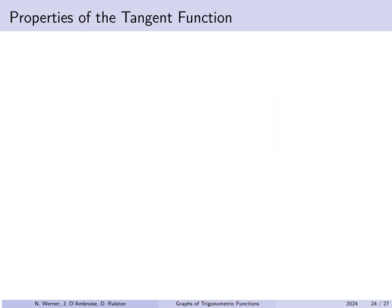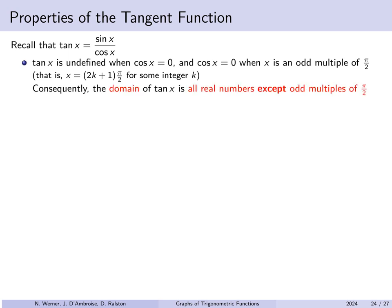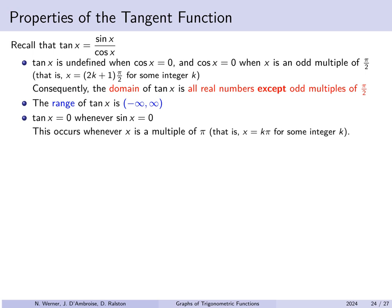Now let's look at the tangent function. Remember that tan(x) = sin(x) / cos(x). Therefore the tangent function is undefined when cos(x) = 0 — we can't divide by 0. Cosine equals 0 at odd multiples of π/2. So the domain of tangent is all real numbers except odd multiples of π/2. The range of the tangent function, in contrast, is all real numbers. The tangent function produces 0 whenever its numerator, sine, is 0 — which happens at multiples of π.